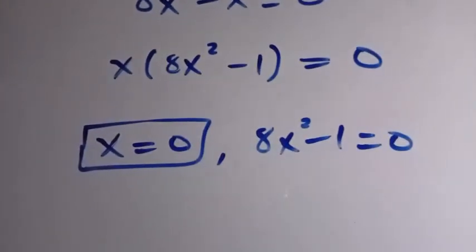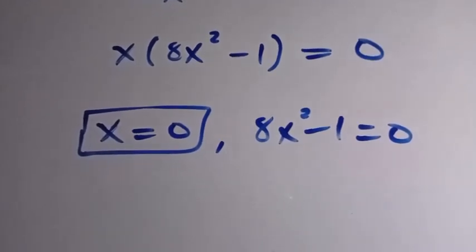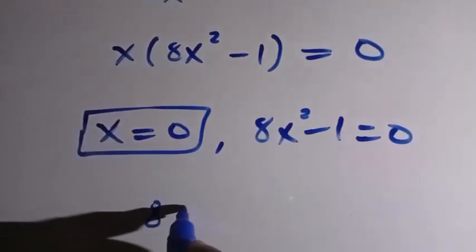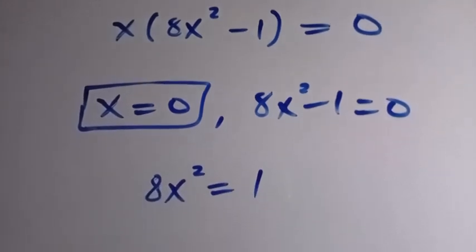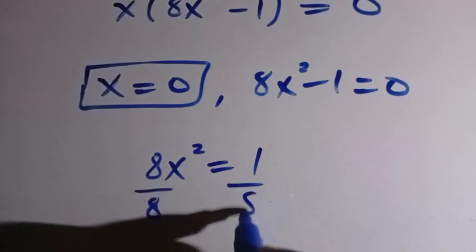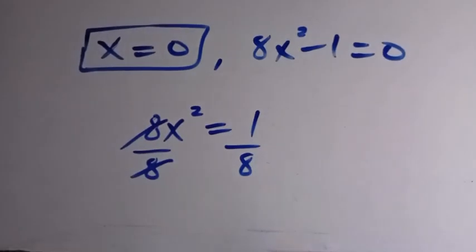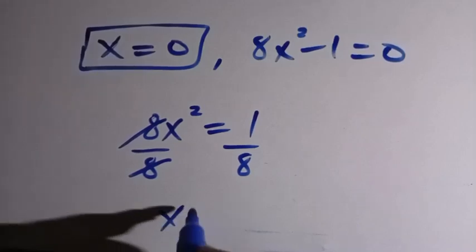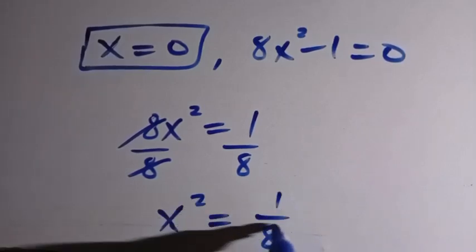So when we try and work more on this side, suppose we transfer 1 to the other side, we have 8x squared equals 1. So let's try and divide both sides by 8 here. By dividing both sides by 8, we have x squared equals 1 over 8.